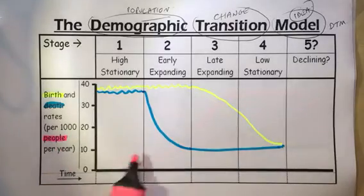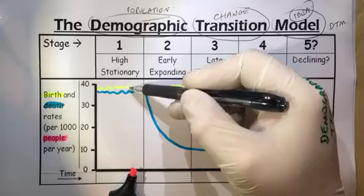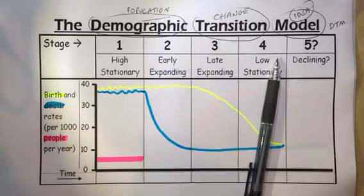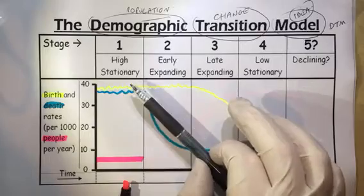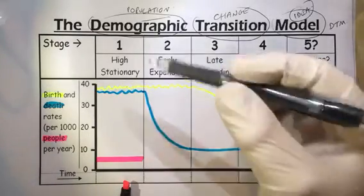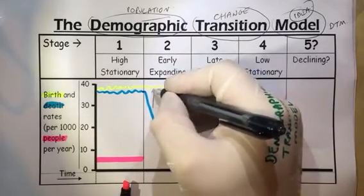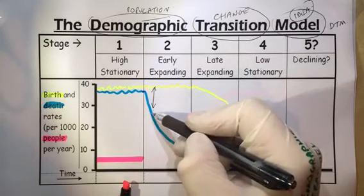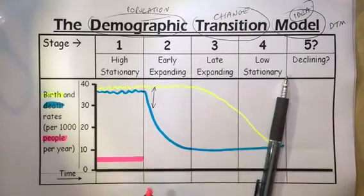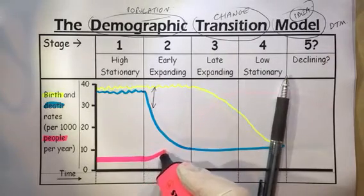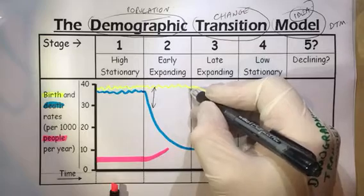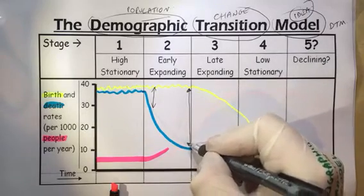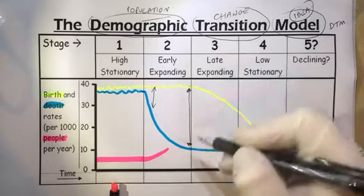Now let's think about the total number of people. In stage one, the birth rate is high and the death rate is high, so total population will be quite low — even though there are lots of births, there are also lots of people dying. In stage two, there are lots of babies being born and not as many people dying, so the population is increasing. The rate of increase starts off quite slow, but then increases — the population grows at an increasing rate because there are more births than deaths.